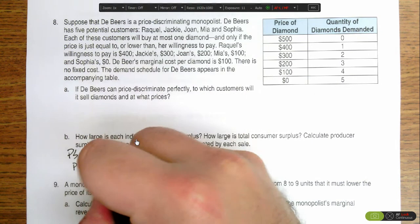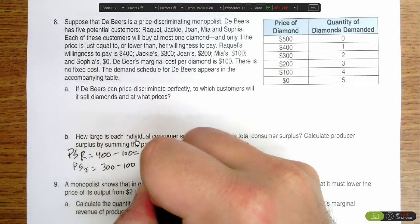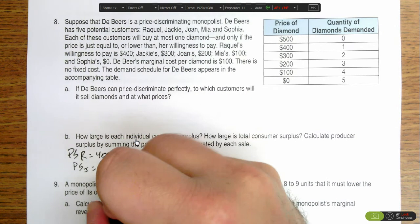For producer surplus for Jackie, she's willing to pay $300. It costs $100 to produce the diamond, so there's $200 in producer surplus for her.